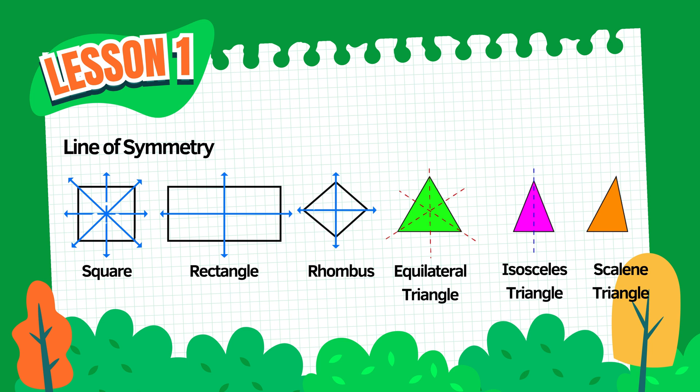A scalene triangle has no lines of symmetry because none of its sides or angles are the same. So remember, a line of symmetry helps us see whether a shape is balanced and mirrored. The more equal parts a shape has, the more lines of symmetry it can have.